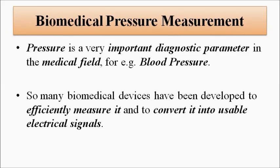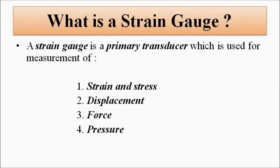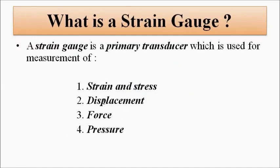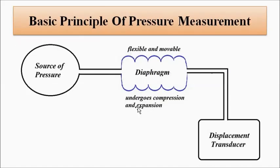The use of a strain gauge as a secondary sensing element is because it can also be used as a primary transducer directly connected to the source of displacement. In the case of displacement measurement it acts as a primary transducer, but since we are using a diaphragm here, the strain gauge behaves as a secondary transducer. It can be used for the measurement of strain, stress, displacement, force, and pressure. Here we are using it as a displacement transducer — as a secondary sensing element — because the diaphragm is the primary sensing element.